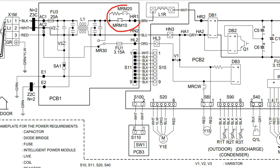Moving on, we have a crankcase heater here. The whole purpose of a crankcase heater is to separate the refrigerant from the oil during off cycles and prevent refrigerant migration. And now we come to our reactor.